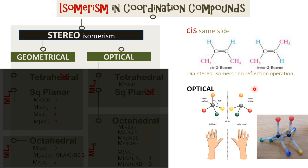Geometrical isomers differ in their arrangement in space. They may not be mirror images of each other and therefore do not exhibit the reflection operation. However, the physical properties of such geometrical isomers differ from each other, like the boiling point or the freezing point.